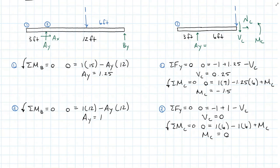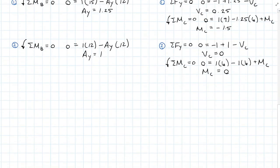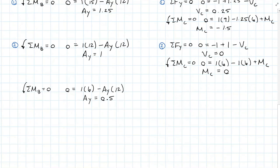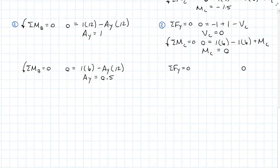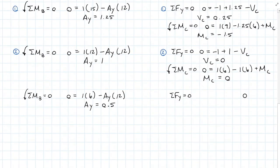Let's solve for A_Y when the unit load is over C. Summing moments about B, I have 1 times 6 feet now minus A_Y times 12, and we find that A_Y will be carrying half of that unit load. On my free body diagram AC, A_Y is now 0.5. Summing forces in the Y direction, I will have minus 1 plus 0.5 minus shear at C, which means shear at C is going to equal negative 0.5.